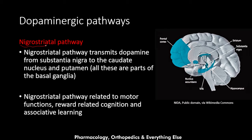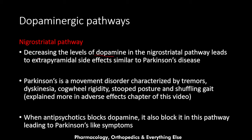The third pathway is the nigrostriatal pathway, which transmits dopamine from the substantia nigra to the caudate nucleus and putamen — all parts of the basal ganglia. This pathway is related to motor functions, reward-related cognition, and associative learning. If dopamine levels in this pathway decrease, this leads to extrapyramidal side effects similar to Parkinson's disease.